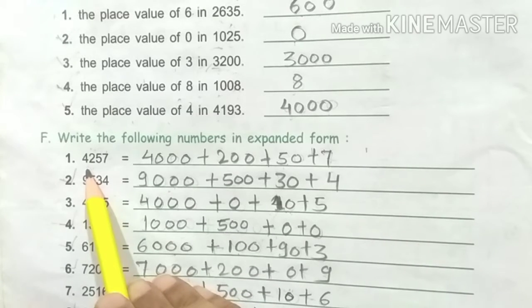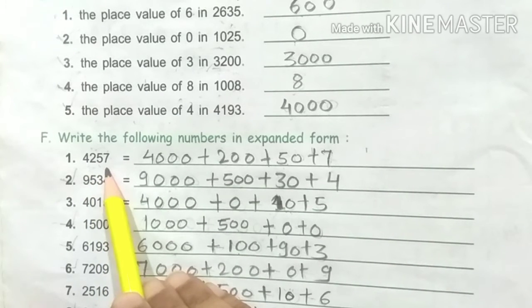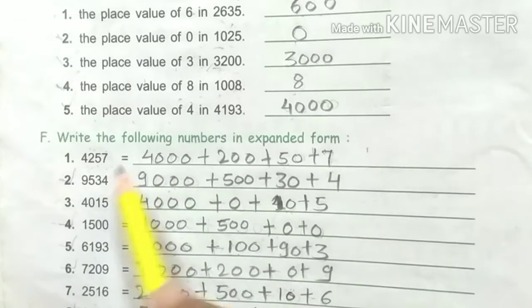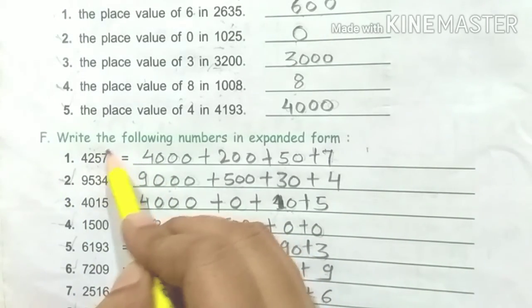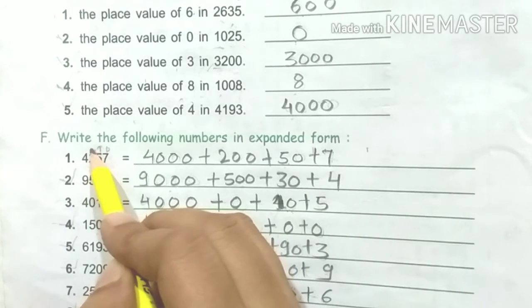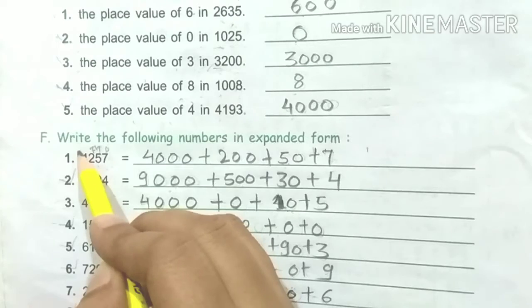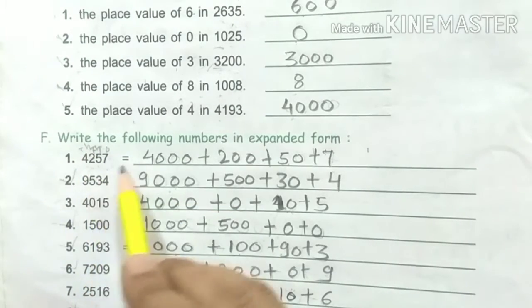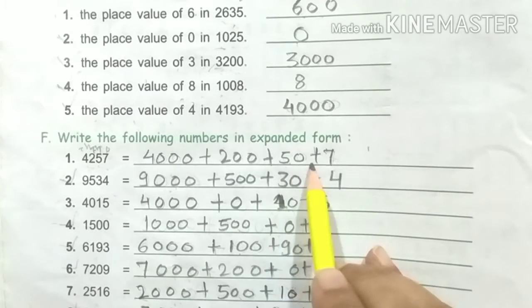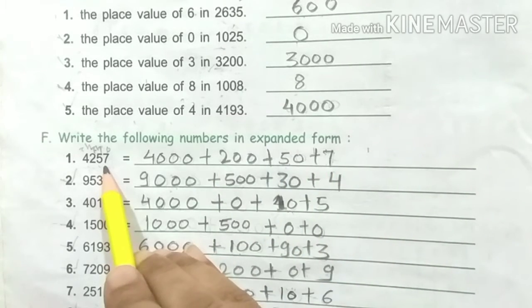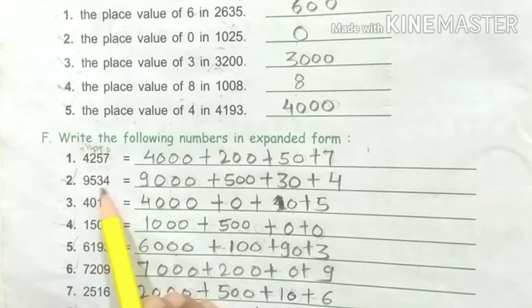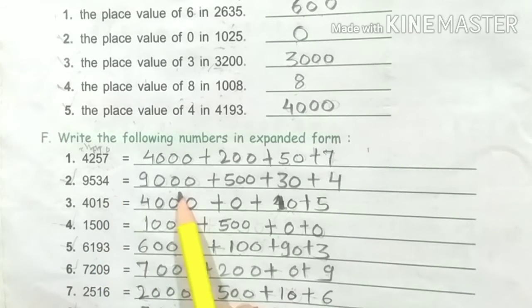First, 4257. Here, 7 is in the ones place, 5 is in the tens place, 2 is in the hundreds place, and 4 is in the thousands place. So it's 4000 plus 200 plus 50 plus 7. This is the expanded form of the number.